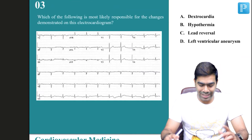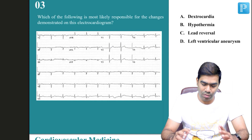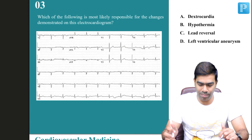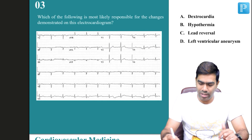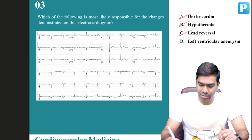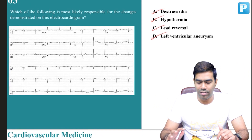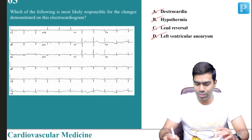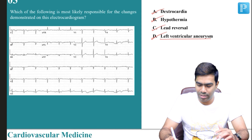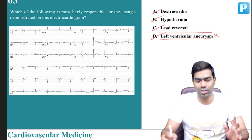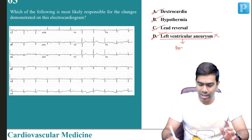Let us move on to question number three: which of the following is most likely responsible for the changes demonstrated in this electrocardiogram? Is it dextrocardia, hypothermia, lead reversal, or left ventricular aneurysm? Let us first rule out the wrong options.